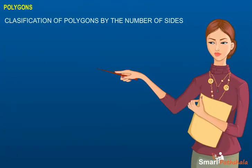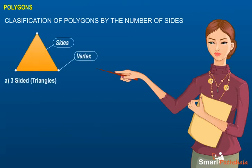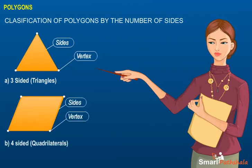Classification of polygons by the number of sides: 3 sides — triangle. The sum of the angles of a triangle is 180 degrees. 4 sides — quadrilateral. The sum of the angles of a quadrilateral is 360 degrees.